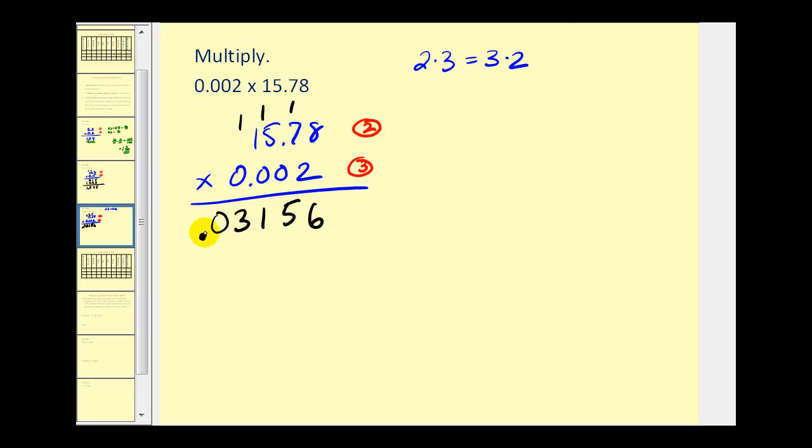Our decimal point would be here. As the note suggested, if we don't have enough digits, we do have to add extra zeros to the left.